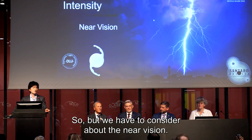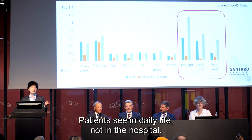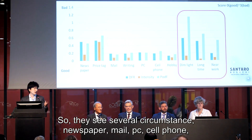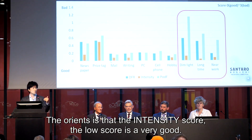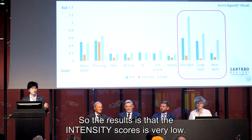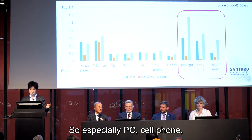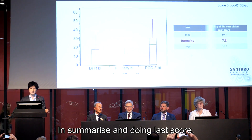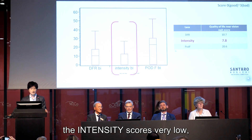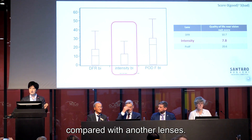We have to consider about the near region. Patients live their daily life, not in the hospital, so they see in several circumstances: newspaper, mail, PC, cell phone, near light, and near work. The orange is the Intensity score — the lower score is better. So the Intensity score is very low, especially for PC, cell phone, near light, and near work. The Intensity score is very low compared to another lens.